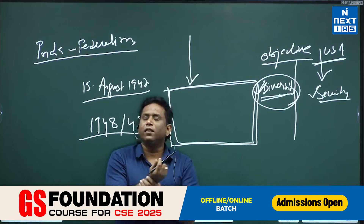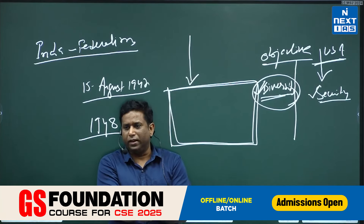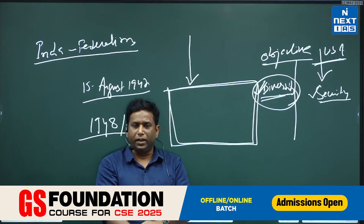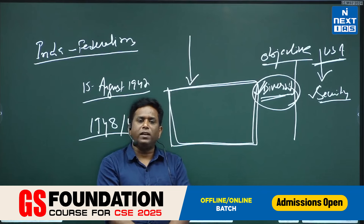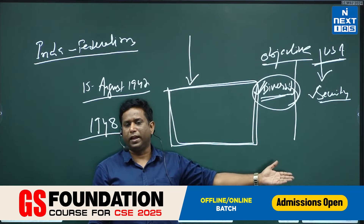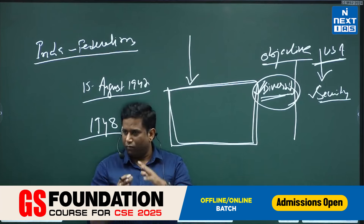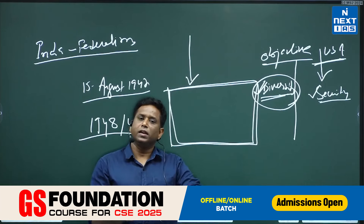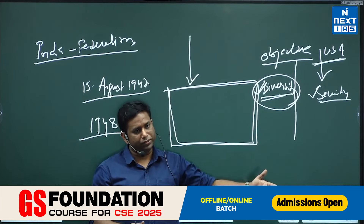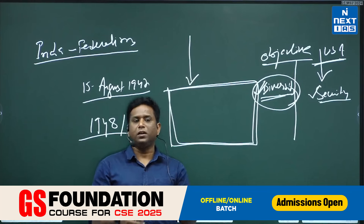In the Indian federal model, when diversity was the goal, why not provide more power to the states in comparison to the union? Why did India not give more power to the states in comparison to the union?